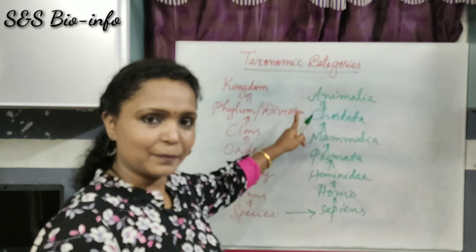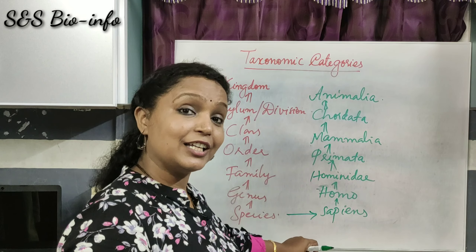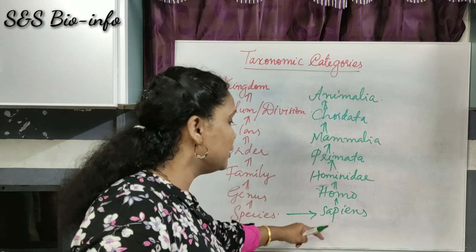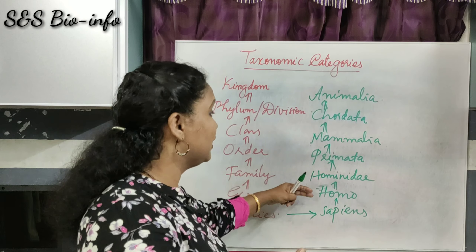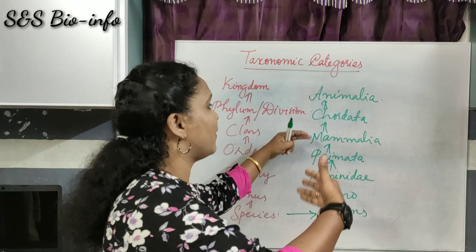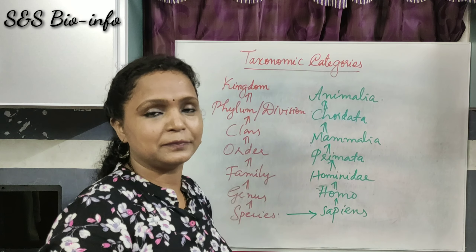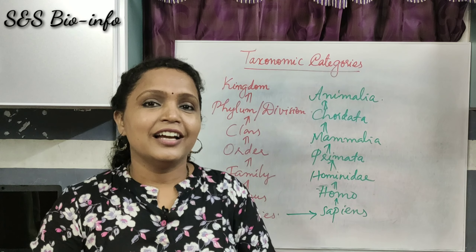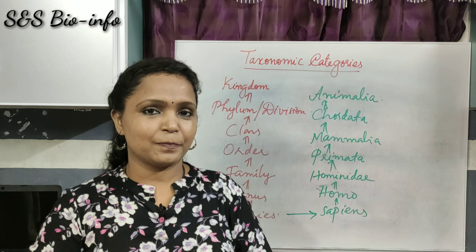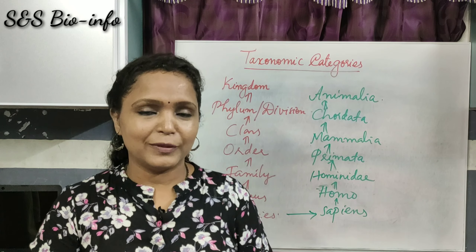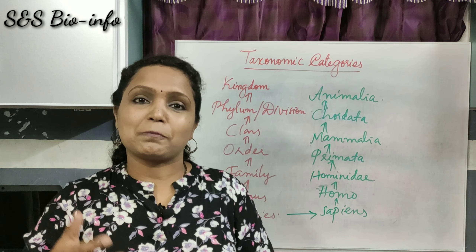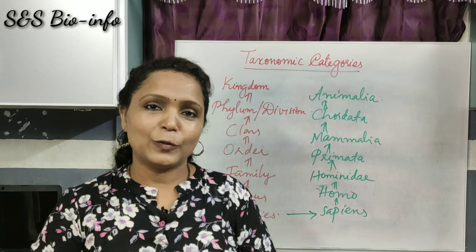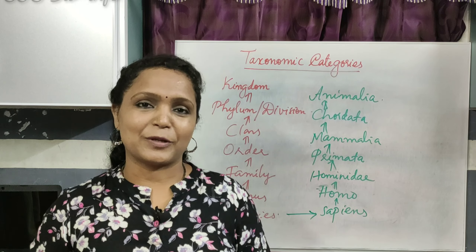This is the way each animal is placed in a different taxonomy category or rank of the classification system — from the lowest category to the highest: from Species, to Genus, to Family, to Order, to Class, to Phylum, and finally to Kingdom. I hope you understood the taxonomy categories and how an animal is placed in the hierarchy of classification. Thank you and have nice moments.